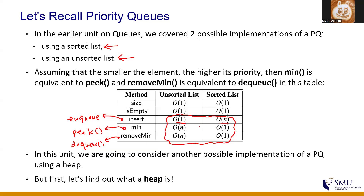Now in this unit, we are going to consider another possible implementation of a priority queue, this time using a heap. But first, let's find out what a heap is.